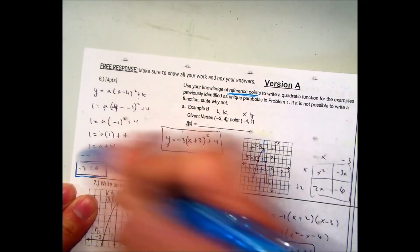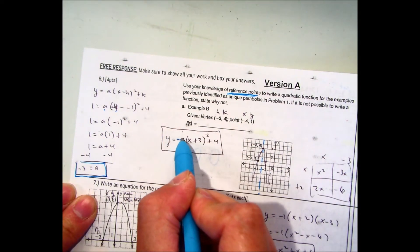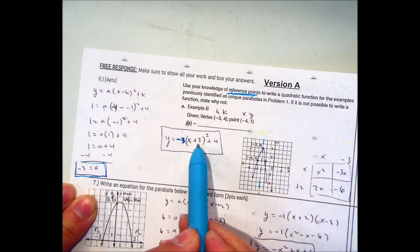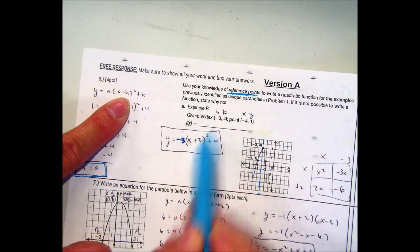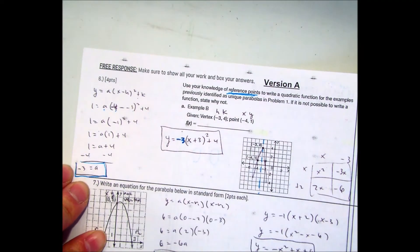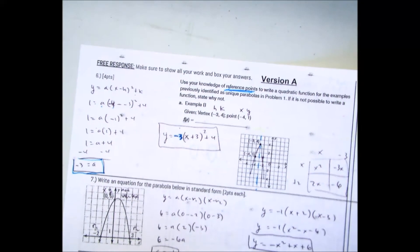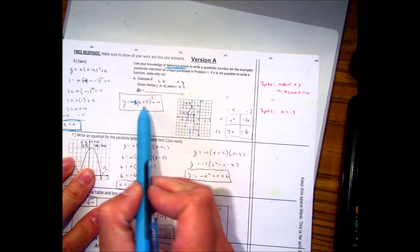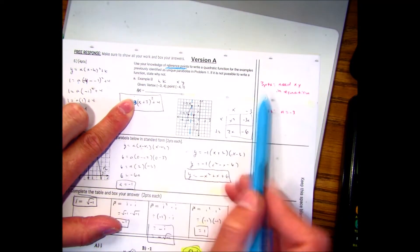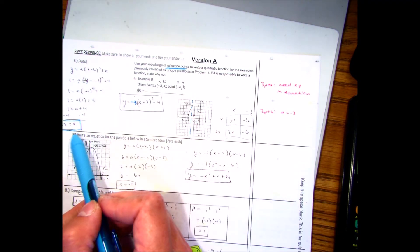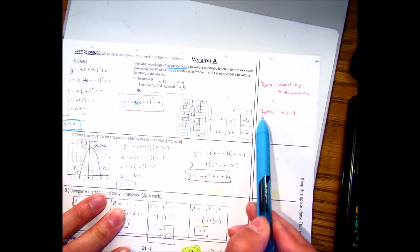My a equals negative 3. I can write that here. And then I already had my h value, which is negative 3. So x minus a negative 3 gives me x plus 3 squared. And my k value is 4. A lot of you may have written x plus 3 squared plus 4. I only gave you 3 points because you need to substitute in the point in order to solve for a. If you solved for a to be negative 3 but could not write an equation, I gave you 2 points.